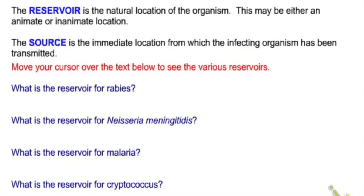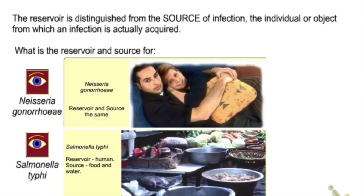The reservoir is the natural location of the organism; the source is the immediate location from which the infecting organism is transmitted. For AIDS, humans are both the reservoir and the source. For gonorrhea, humans are the reservoir and the source. For Salmonella, humans are the reservoir, but the source can be food and water — which are vehicles for transmission.